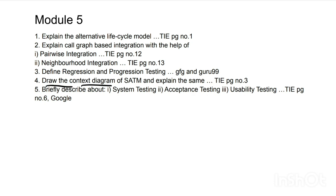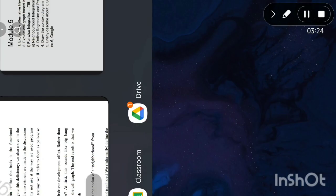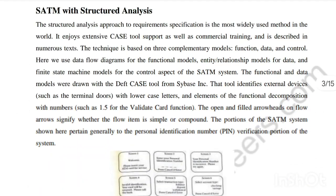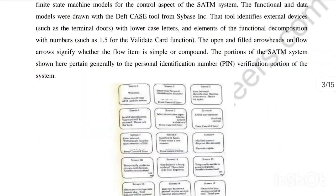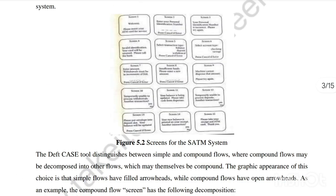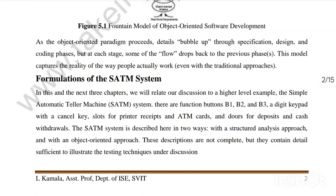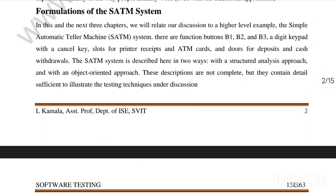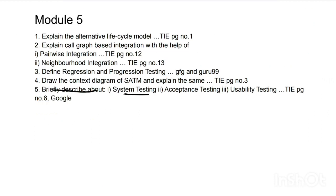The fourth question is the context and diagram for SATM, found at page number 3. SATM is a type of model involving structured analysis — draw the diagram and write information about it. The formulations for the SATM system are also to be mentioned. The fifth question covers system testing, acceptance testing, and usability testing — system testing is found at page number 6 of the Module 5 notes.